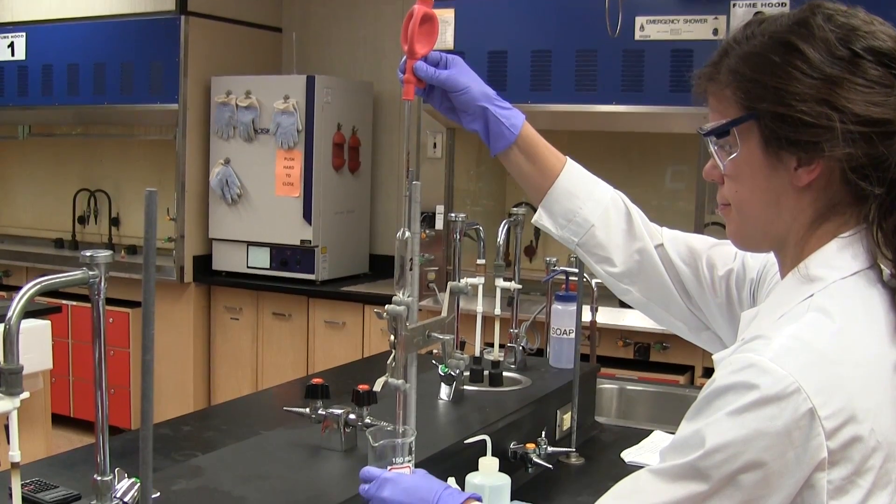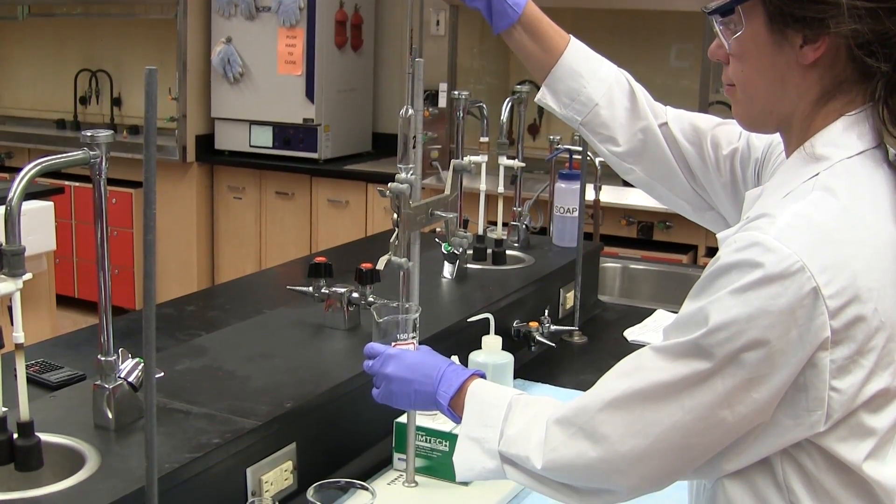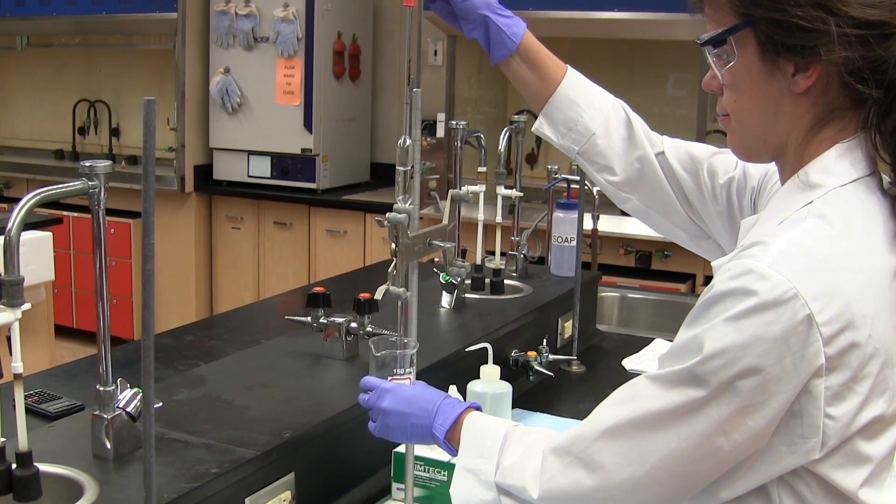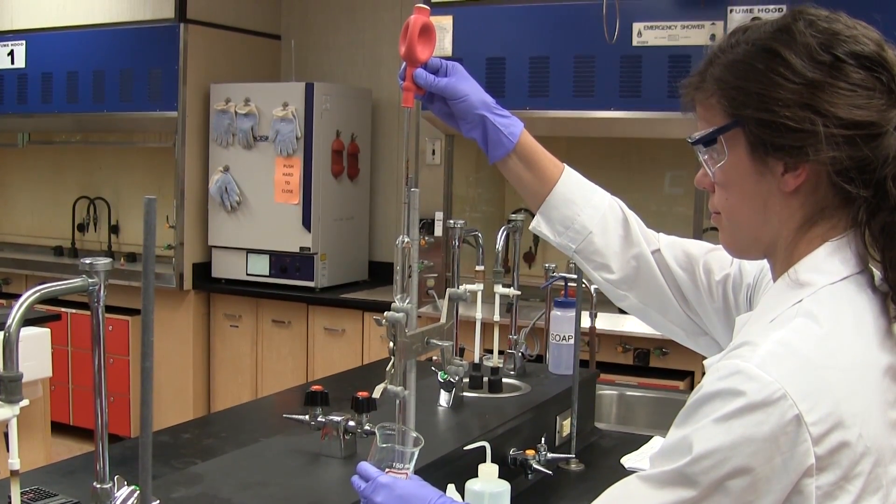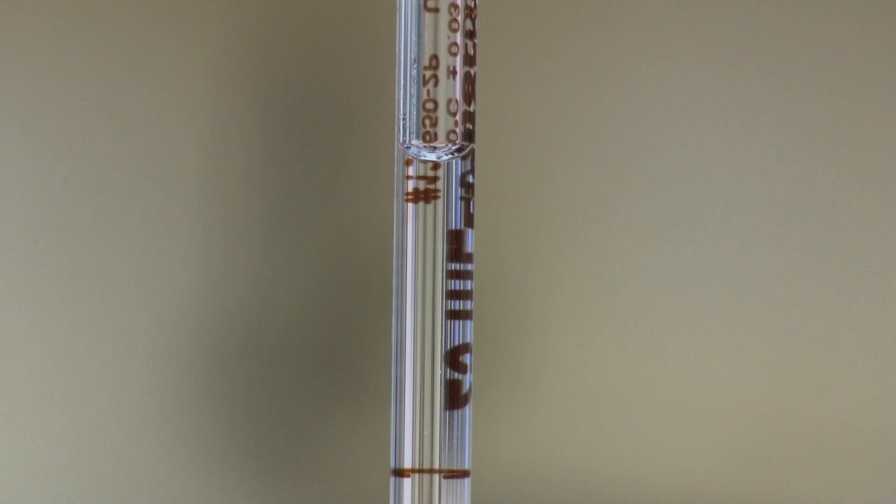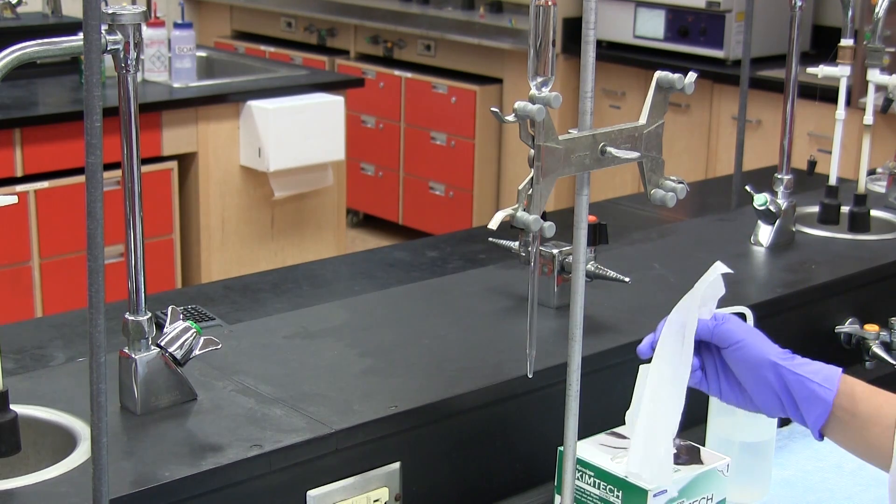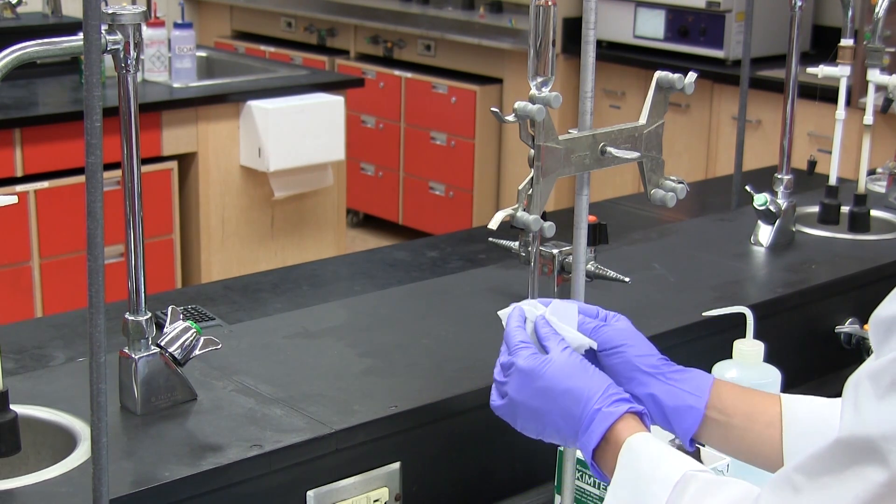The tip of the pipette is immersed in the solution to be transferred and using a pipette filler the solution is sucked into the pipette until the meniscus is two to three centimeters above the calibration mark. The pipette is removed from the solution and the tip is dried with a tissue.